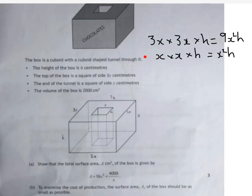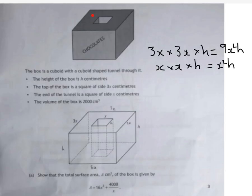So the volume of this shape, this chocolate box, is the volume of the cuboid minus the volume of the cutout. So that would be 9x squared h subtract x squared h, otherwise known as 8x squared h. And that volume is given to us. It's 2,000. So 2,000 equals 8x squared h.